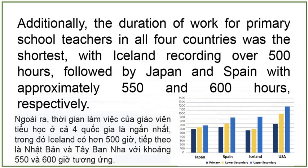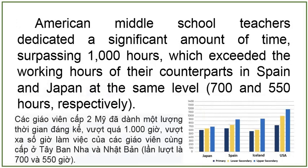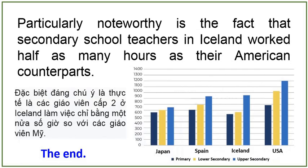The duration of work for primary school teachers in all four countries was the shortest, with Iceland recording over 500 hours, followed by Japan and Spain with approximately 550 and 600 hours respectively. Meanwhile, the USA maintained its top position, once again registering an almost 700-hour commitment. American middle school teachers dedicated a significant amount of time, surpassing 1,000 hours, which exceeded the working hours of their counterparts in Spain and Japan at the same level, at 700 and 550 hours respectively. Particularly noteworthy is the fact that secondary school teachers in Iceland worked half as many hours as their American counterparts.